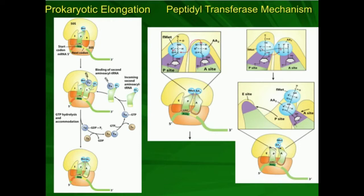What's going to happen then is EF-TS, another protein, is going to cause dislocation of the GDP, and you have an EF-Tu·TS complex. Then GTP is going to come back onto EF-Tu and displace the TS. So now you have another freshly made EF-Tu·GTP that's able to bind to another incoming tRNA that has an amino acid, and you just repeat this cycle.